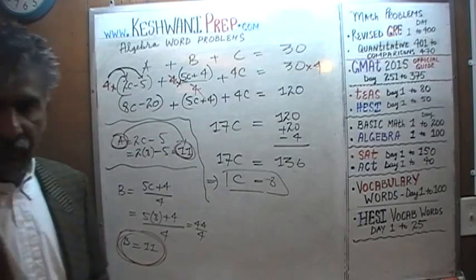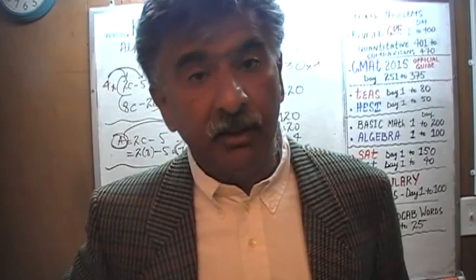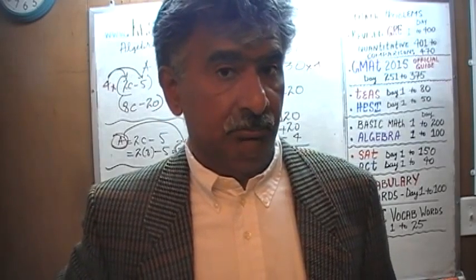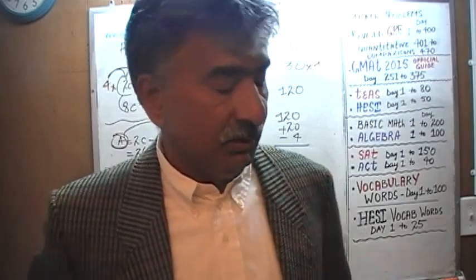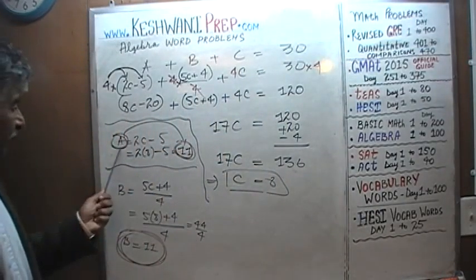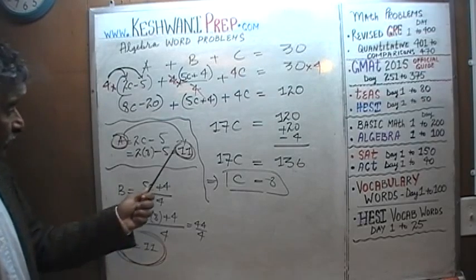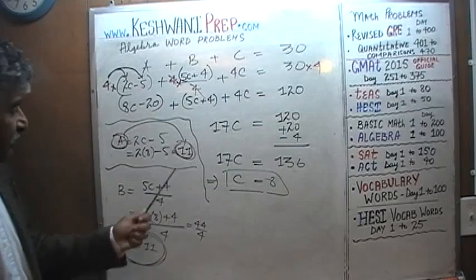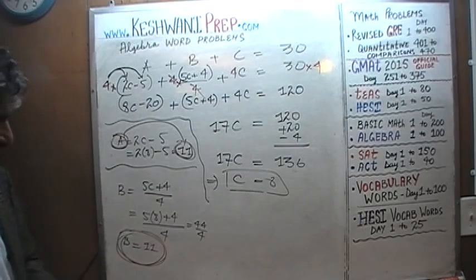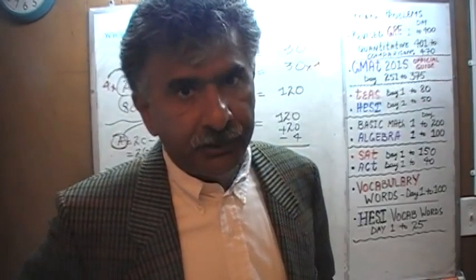Let's quickly verify: the sum of their ages must be 30. 11 plus 11 is 22, plus 8 is 30. It works out. See you tomorrow — bye!